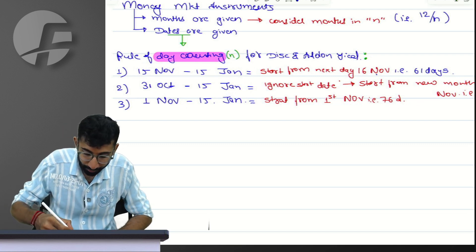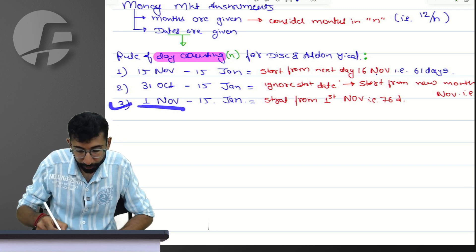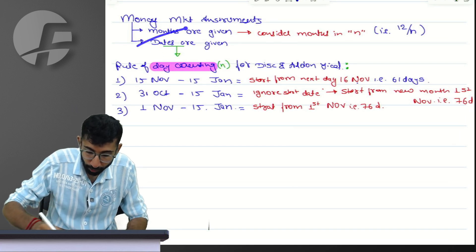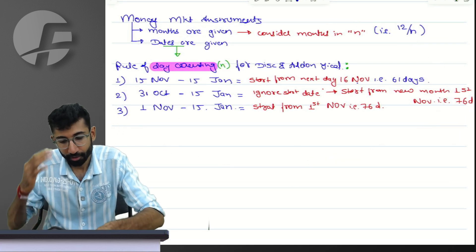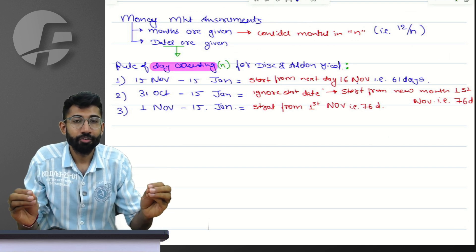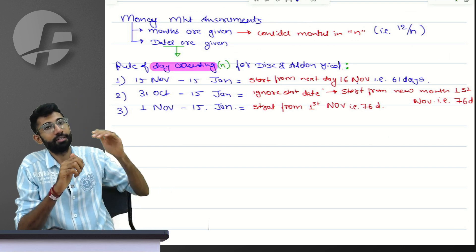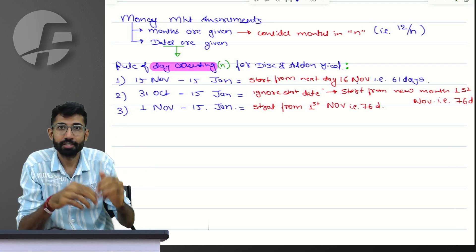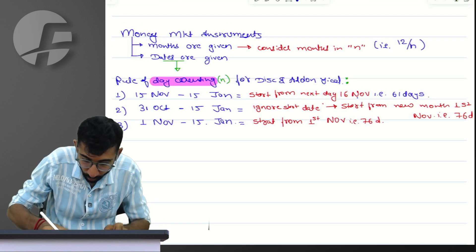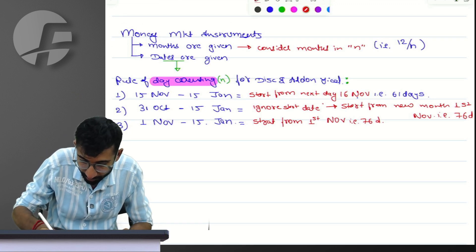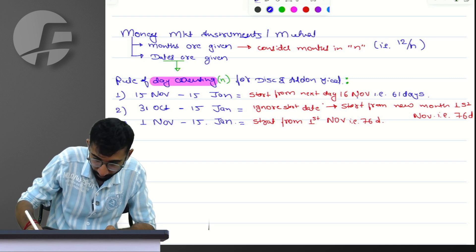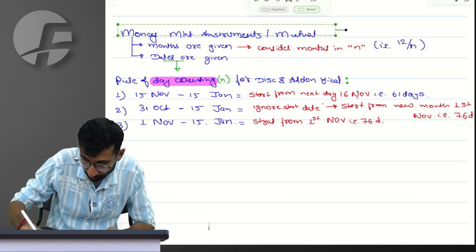You do this only when the period generally starts from 1st of any month. Let me conclude the day counting rule for you, because if I don't teach you this you will always worry about what the institute does — sometimes it considers a day, sometimes it excludes or includes it. This day counting rule is applicable for money market instruments and in fact for the entire AFM subject.